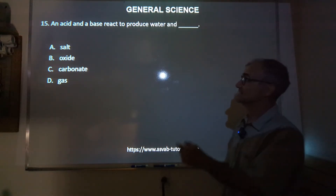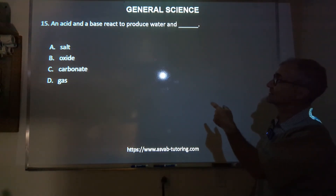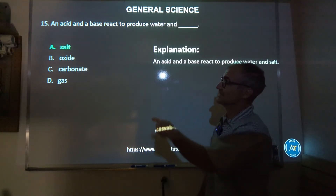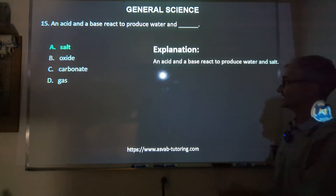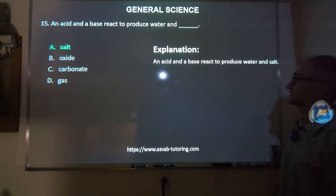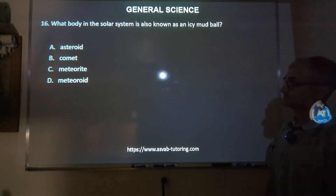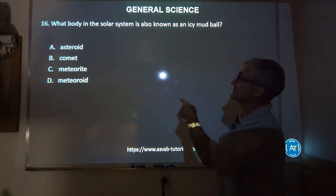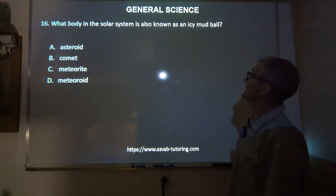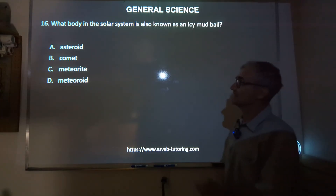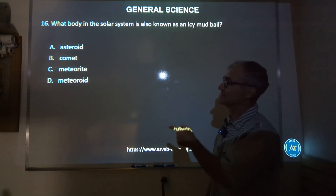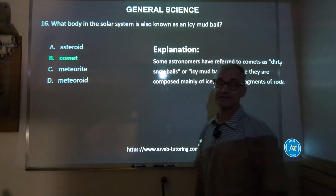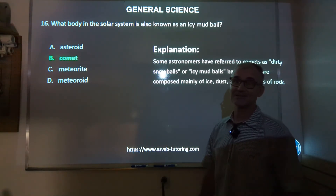Number 15: an acid and a base react to produce water and what? Correct answer is A, salt. An acid and a base react to produce water and salt. Number 16: what body in the solar system is also known as an icy mud ball? Asteroid, comet, meteorite, or meteoroid? Correct answer is B, comet. Again, vocabulary word.